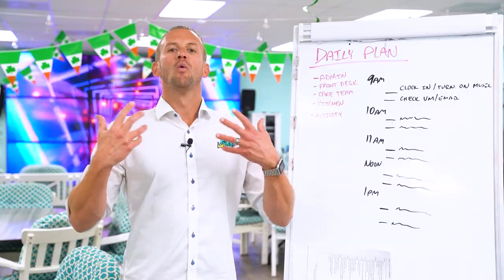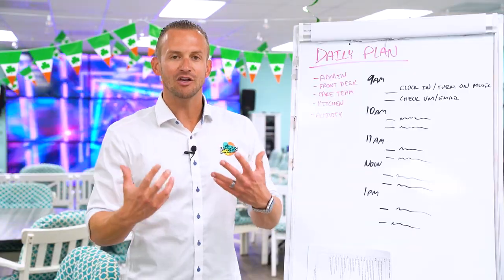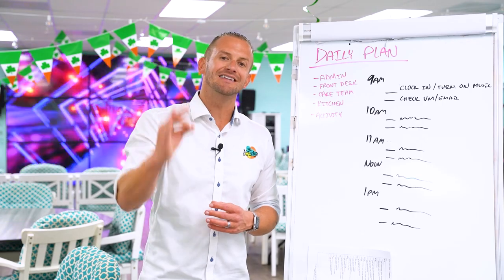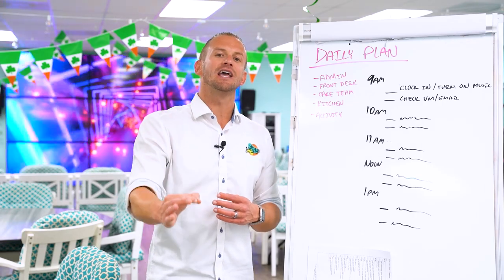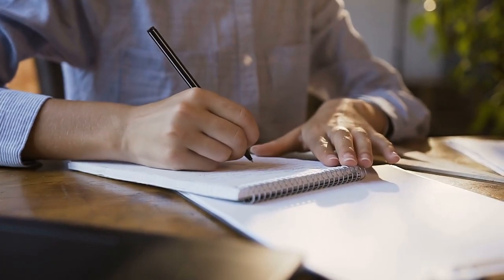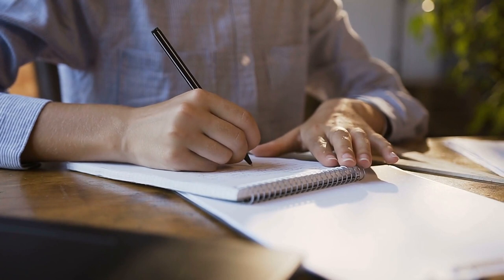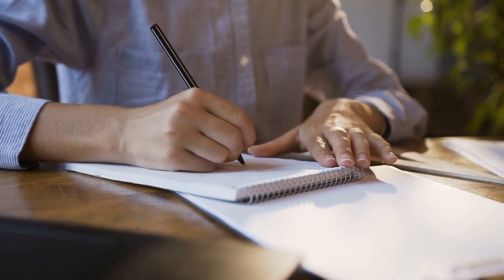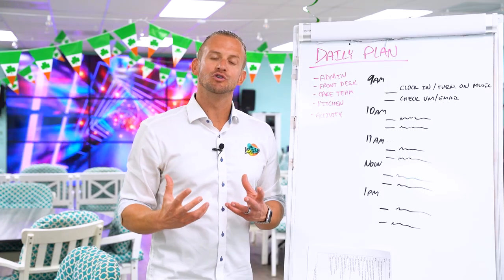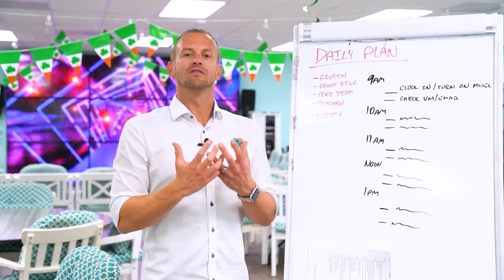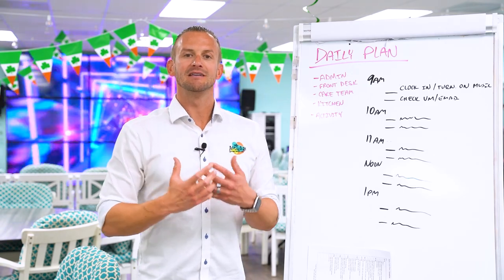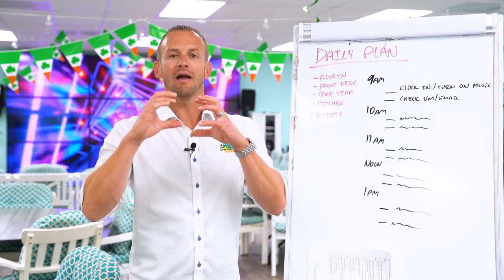Envision what a day should look like. Envision how the ideal day would flow and write every single step down onto a sheet of paper. Then you're going to prioritize all of these items and put them in between time blocks.